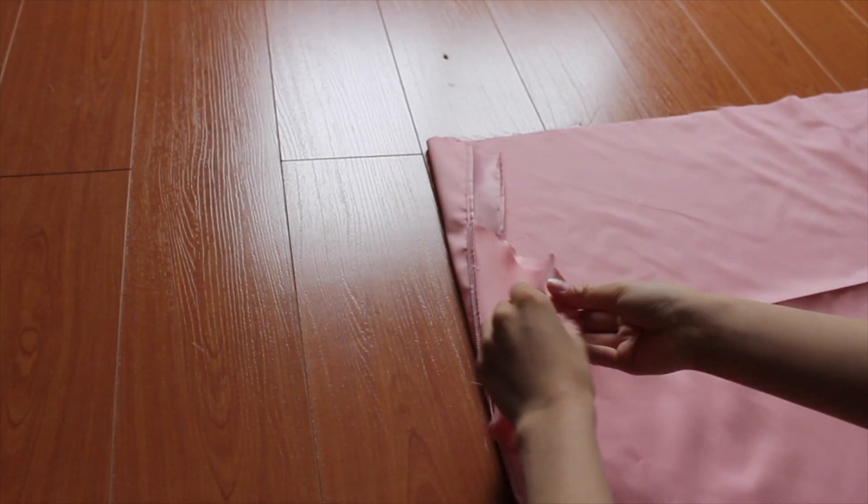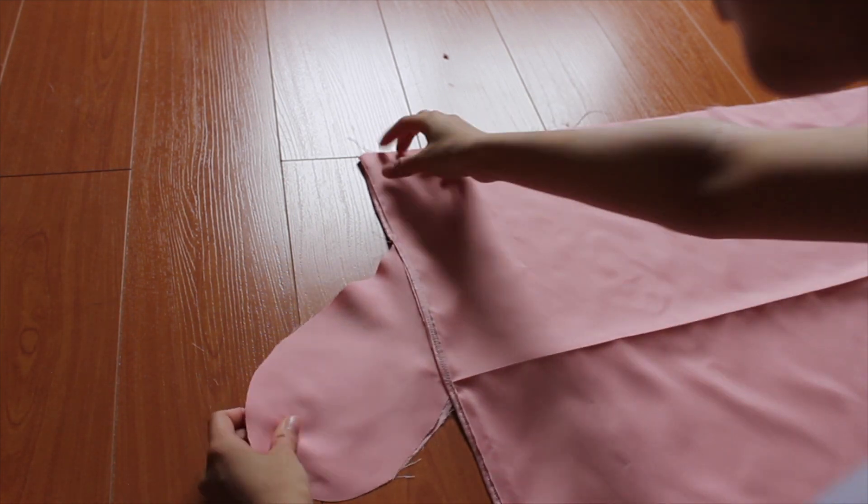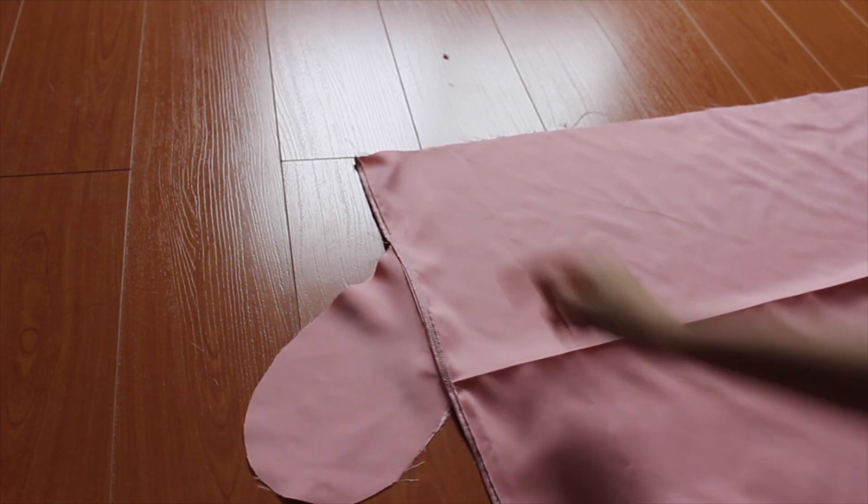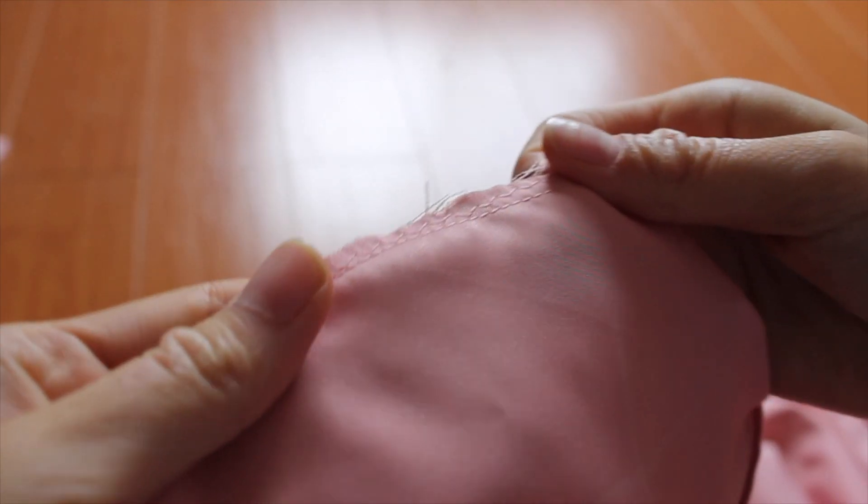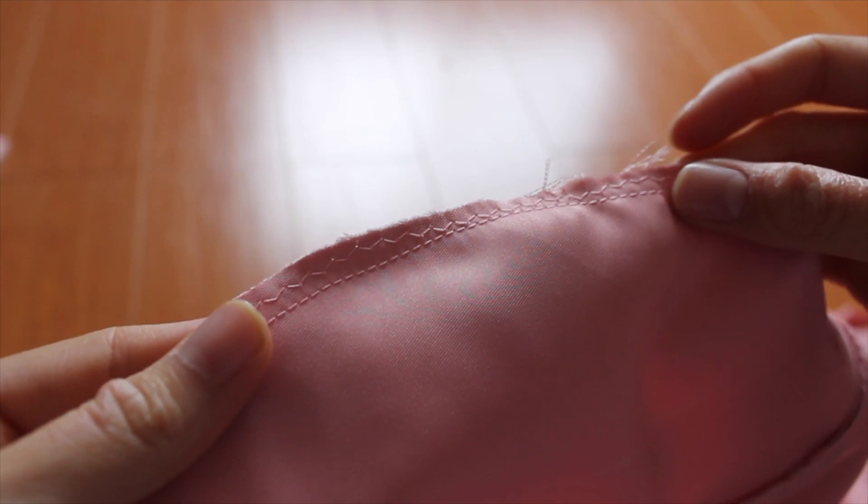With right sides facing each other, I went ahead and sewed a straight stitch down and then around the pockets and back down again. I went back to the pockets and sewed a zigzag stitch to prevent fraying.